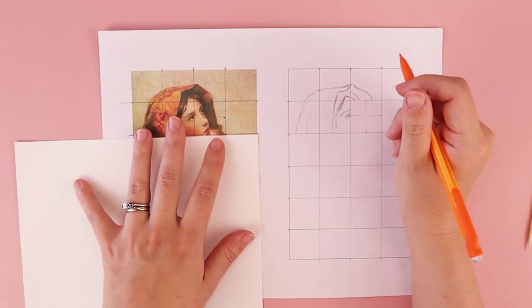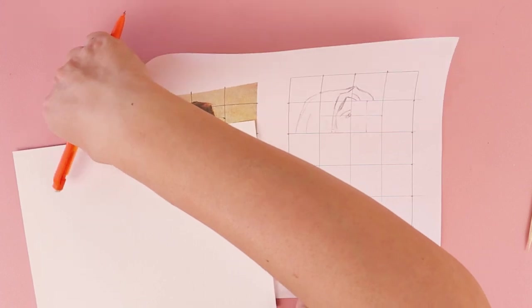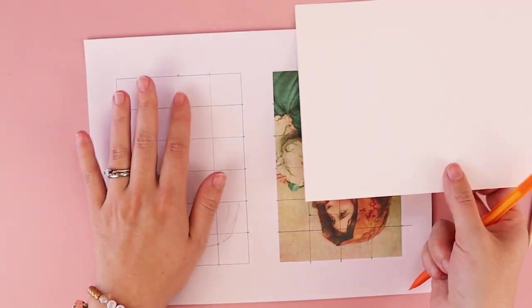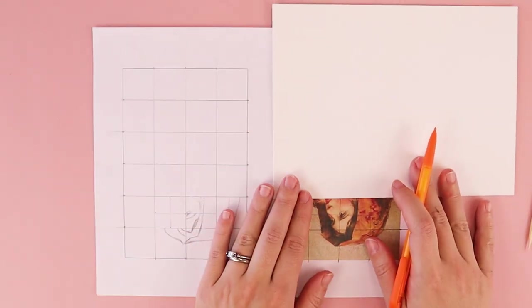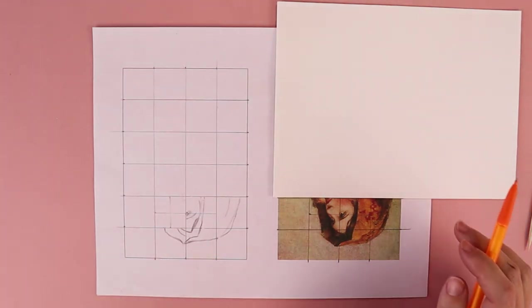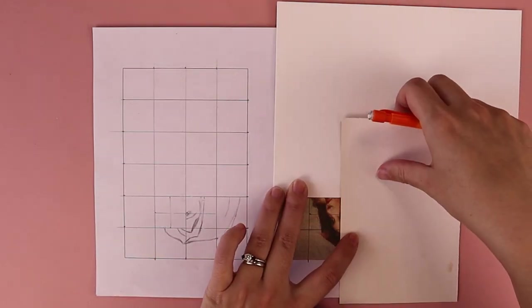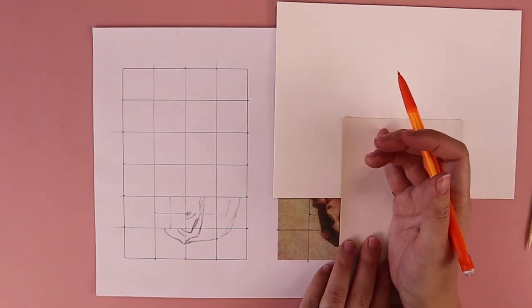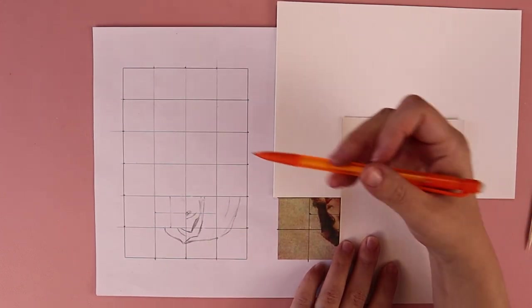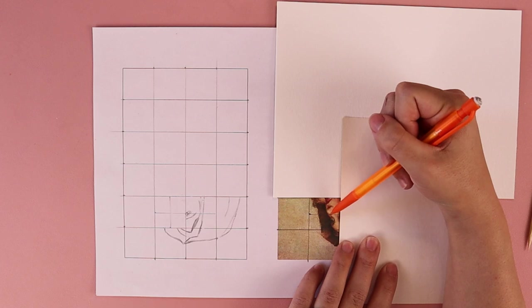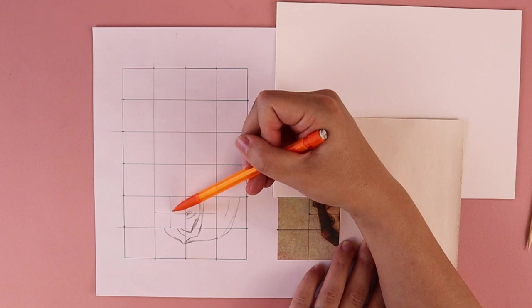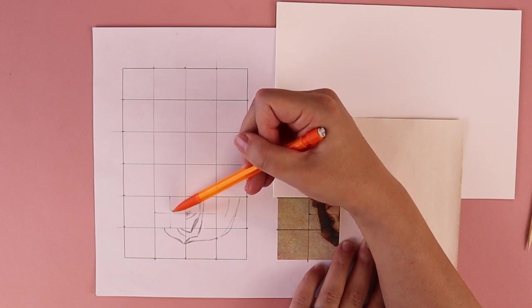So sometimes what I do to trick my brain even further is I'll flip my reference upside down. That way it tricks my brain a little bit more. So I'm going to be putting in this part for the nose and I'm focusing more on just the lines and the shapes.